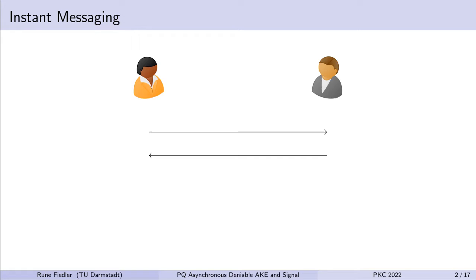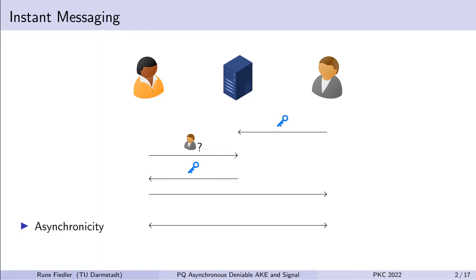Let's review the setting of instant messaging. Alice wants to initiate a conversation with Bob. If both of them are online at the same point in time, this is straightforward. However, if Bob is offline, we can use a key server, and Bob uploads a so-called pre-key bundle to the key server ahead of time. Then Alice queries the key server to get Bob's pre-key bundle, computes her first message, and sends it to Bob, who can read it whenever he comes back online. Afterwards, both of them can keep sending messages at their convenience. This feature is called asynchronicity.